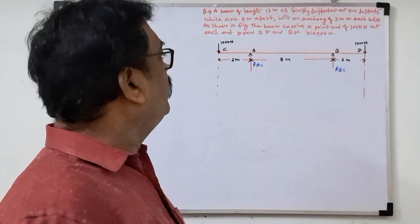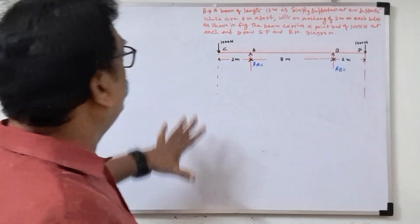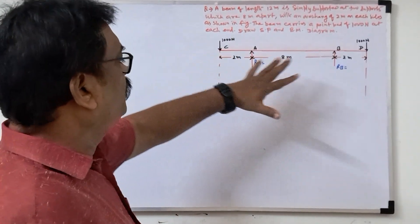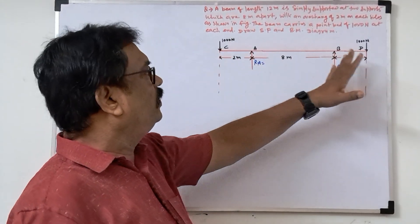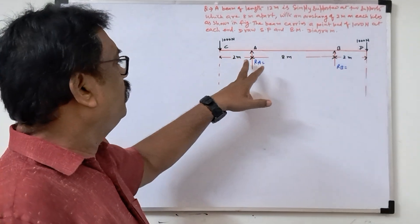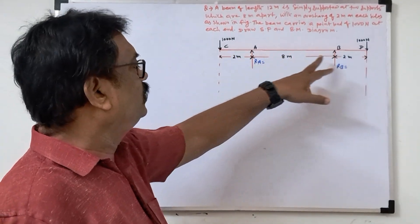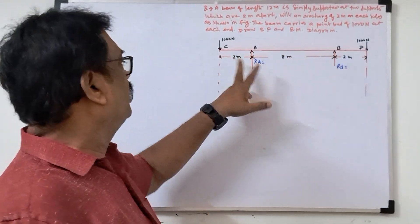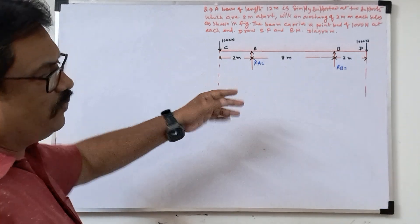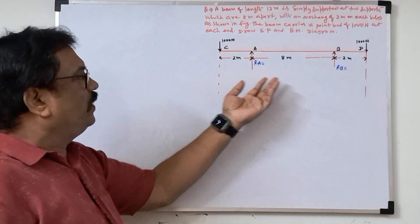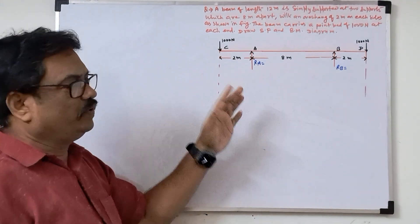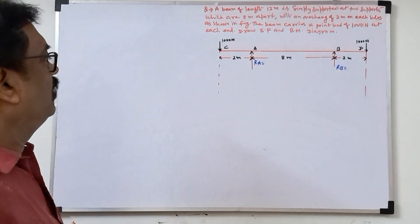Hello friends, welcome to my YouTube channel. Today I am going to solve the simply supported beam problem, where they are given both in the overhang. First we will find the support reaction, then we will find the shear force and bending moment diagram.